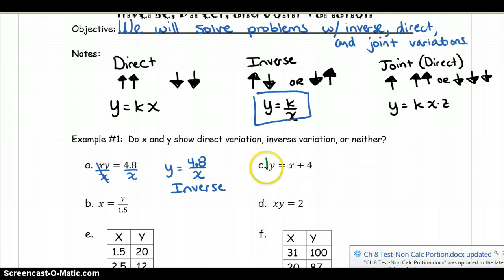Looking at the second one, we have y equals x plus 4. Well, that's not a direct relationship, because all it's saying is, as one thing is going up, the other thing is being added to 4, not being multiplied by 4. So therefore, this is neither.